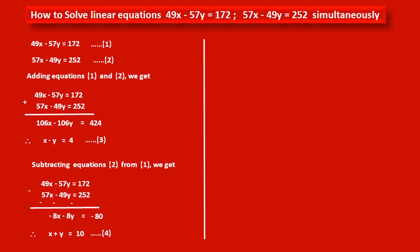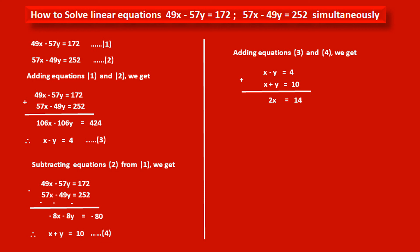Now equations 3 and 4 are more simple compared to the given equations 1 and 2. We solve equations 3 and 4 simultaneously to find the values of x and y. Adding equation 3: x - y = 4, and equation 4: x + y = 10. Adding terms of variable x: x + x = 2x. The y terms eliminate. On the right-hand side, 4 + 10 = 14. Therefore, dividing both sides by 2, we get x = 7.